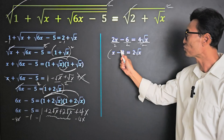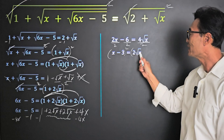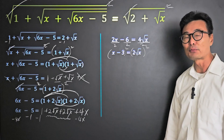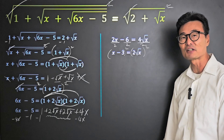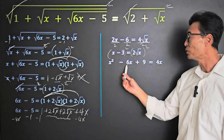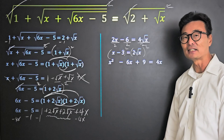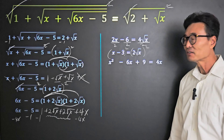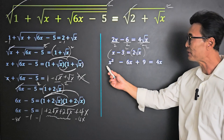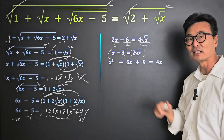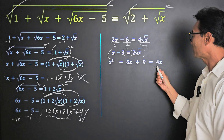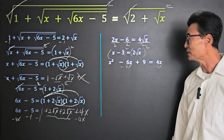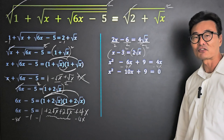Now let's go ahead and square all of the left side and all of the right side. If I multiply x minus 3 squared — that is, x minus 3 times x minus 3 — we're going to get x squared minus 6x plus 9. And if I square the right side, we end up with 4x. Now that we don't have any more square roots and we have a quadratic equation, we want to make the right side equal 0. So let's subtract 4x from both sides, where we end up with x squared minus 10x plus 9.